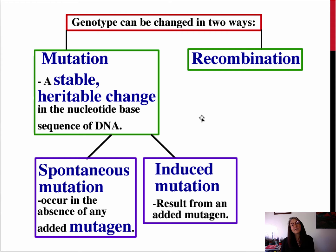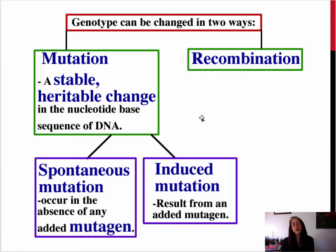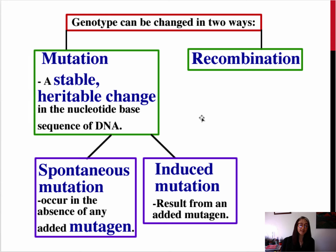We also recognize that mutation can be induced. Within the presence of chemicals — it's interesting that we talked about wartime Japan in World War II — well, in World War I, we were famous for using things like nitrogen mustard. These are chemicals that can induce mutation. Mutagens is the name that we give to those chemicals. So these are two ways that we can see mutation occurring.